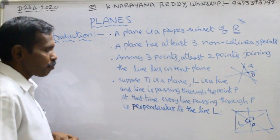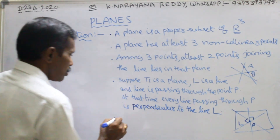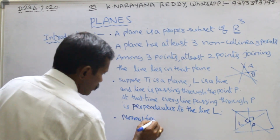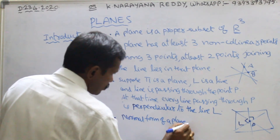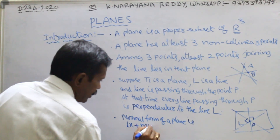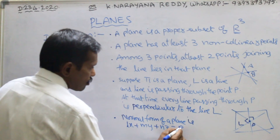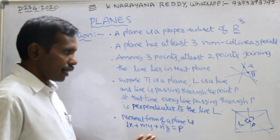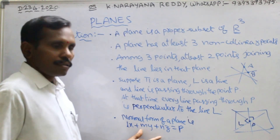The next point is the normal form of a plane. The normal form of a plane is: l x plus m y plus n z equals to p. This is the normal form of a plane — please remember this formula, it is very important in future classes for solving problems.